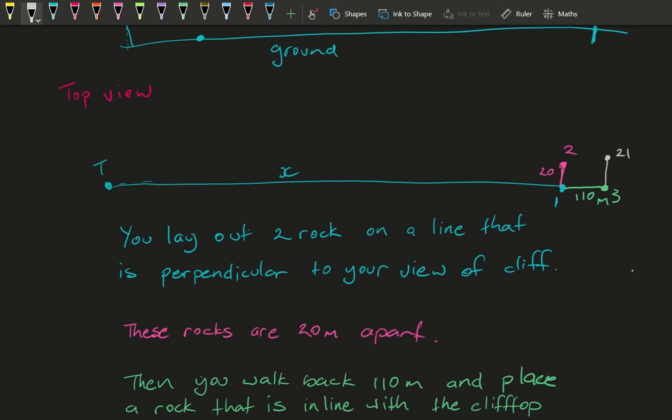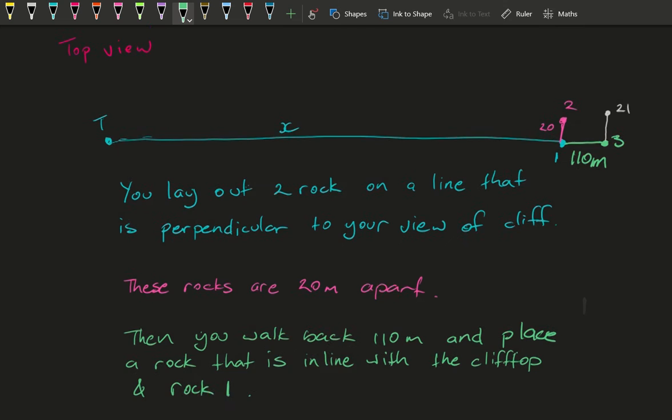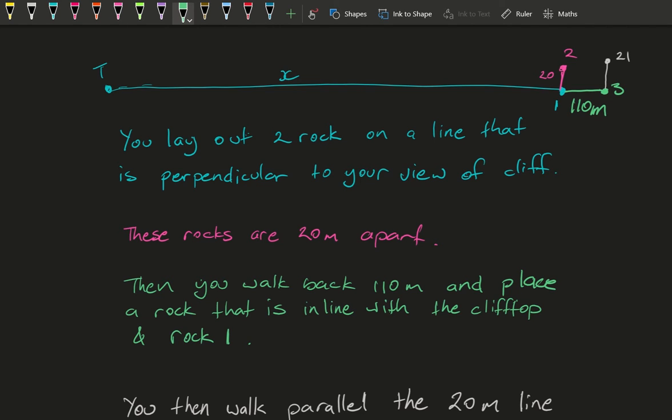These rocks are 20 metres apart, and these are the two pink ones here. Then you walk back 110 metres. Then you lay down rock three. So you've walked back 110 metres. Your first two were 20 metres apart in this line here. Then another 110 metres back, you make another line that is parallel to the pink line, and that is 21 metres long. And of course the whole thing is there's 110 metres between the parallel lines.